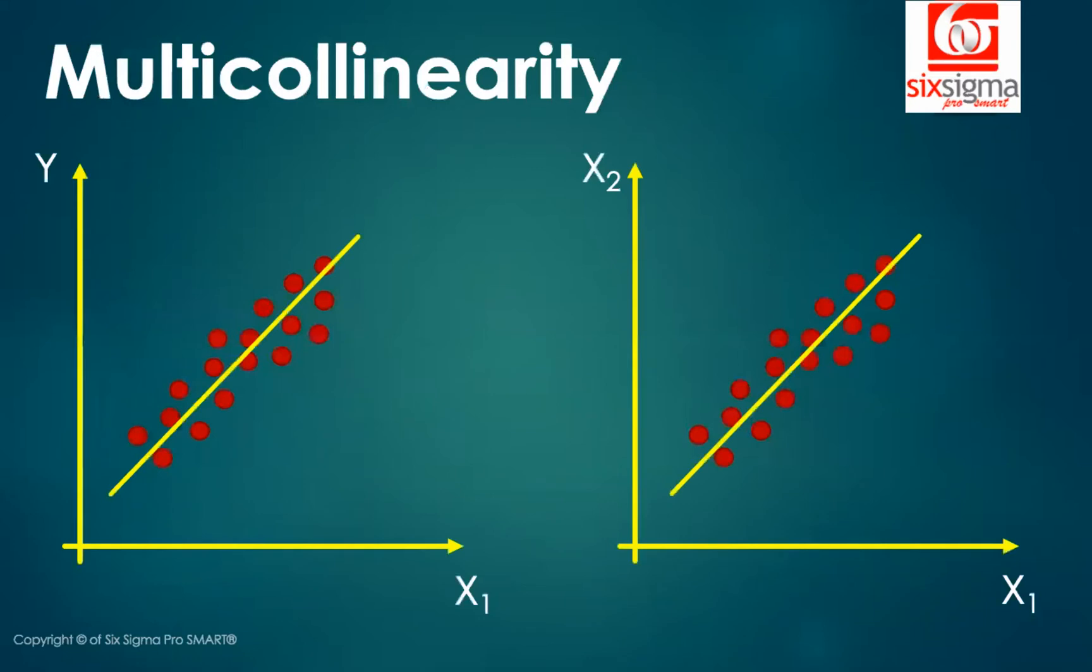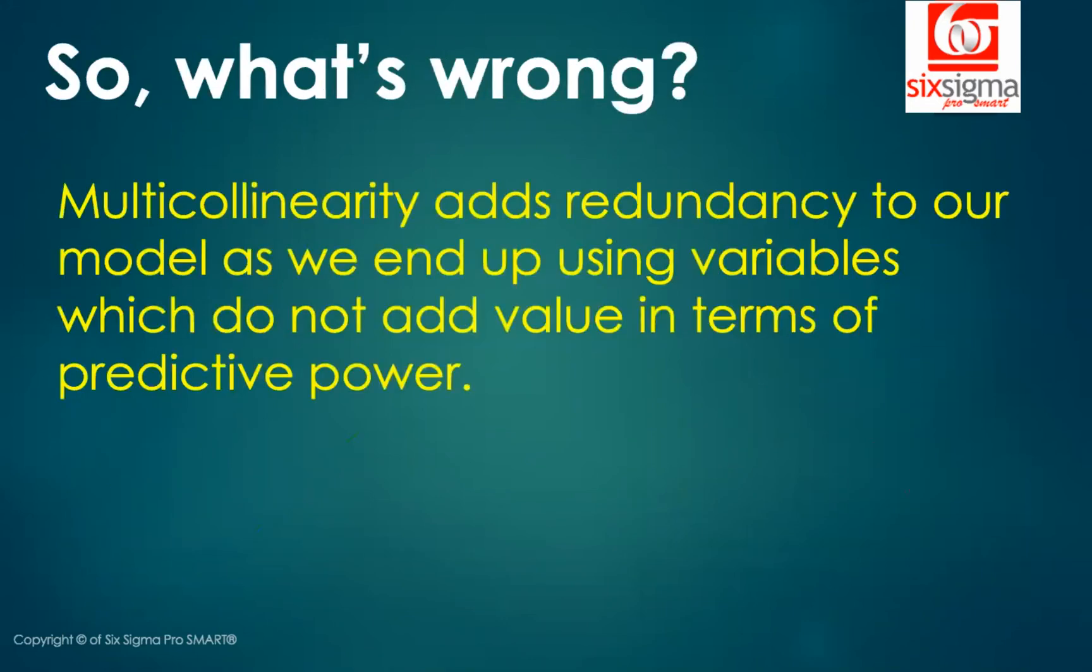The last is multicollinearity. And if you recollect, we discussed it at length in our video on the principal component analysis. We explored the idea of why it is good to have a correlation between your dependent variable and the independent variables, but it is not such a good idea when you have correlations between two or more independent variables. We deliberated on this idea in a little more detailed way in the last video on principal component analysis. I'll leave the link in the description. You may simply watch that again. But just to summarize, what's wrong with multicollinearity? Multicollinearity adds a redundancy to our models as we end up using variables which do not add value in terms of predictive power.